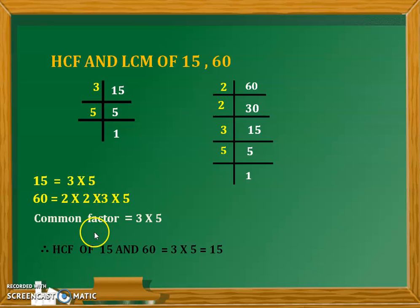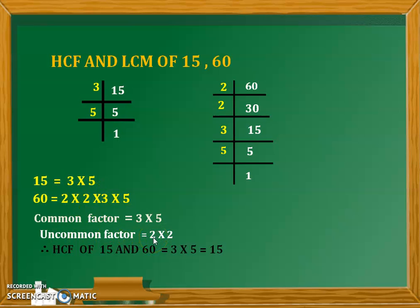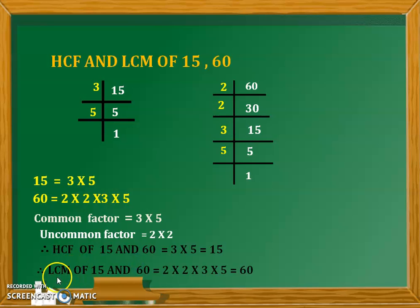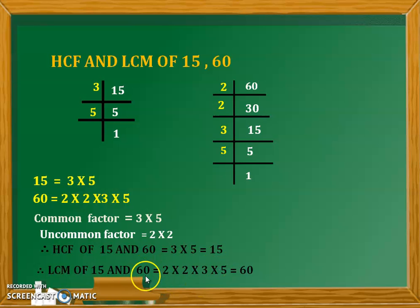Now to find the LCM, the additional step is to find the uncommon factors. That is 2 multiplied by 2, which is uncommon. After finding the common and uncommon factors, to find LCM I am going to multiply them all together — that means 2 multiplied by 2, multiplied by 3, multiplied by 5. Multiplying all together we get the answer 60. Therefore the LCM is 60.